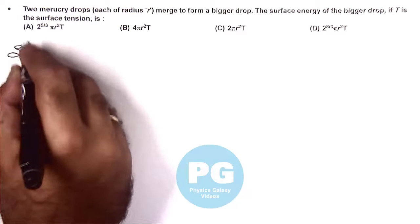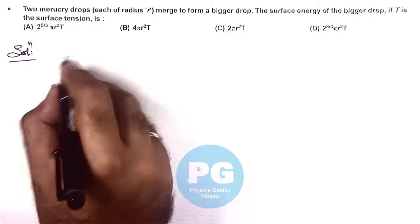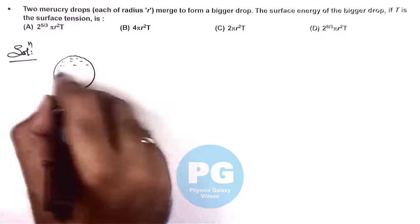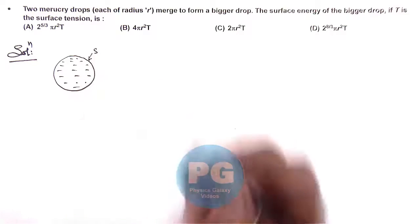Here again we make use of the concept of the surface energy of liquid drop. When we talk about a liquid drop, here we are using mercury. So a liquid drop only has one surface outside S.